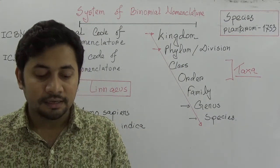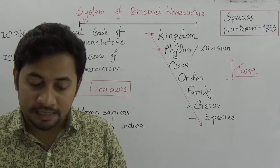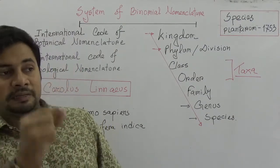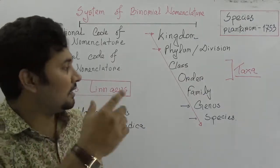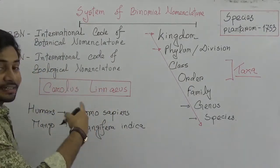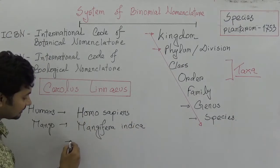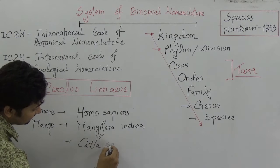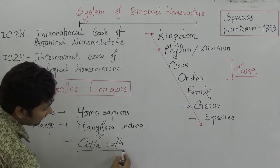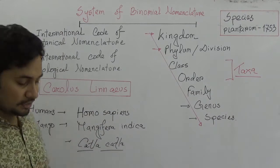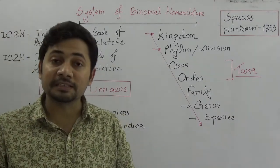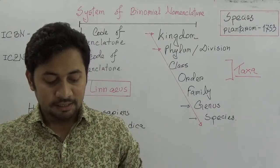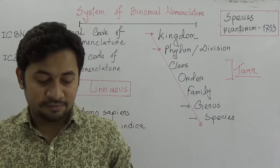Principle number five: at the time of printing a scientific name, it should be done in italic type — an oblique style. For example, for catla fish it would be written as Catla catla in italics. So in case of printing any scientific name, it should be done in italic.